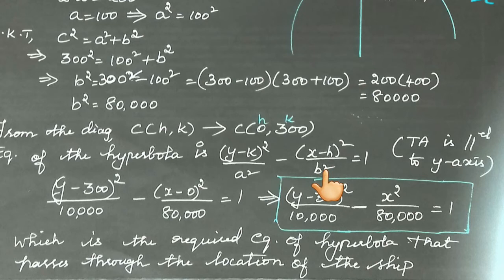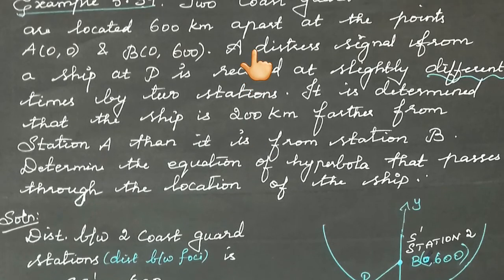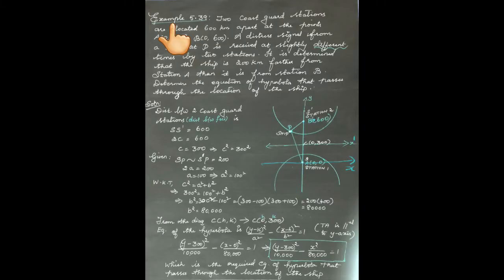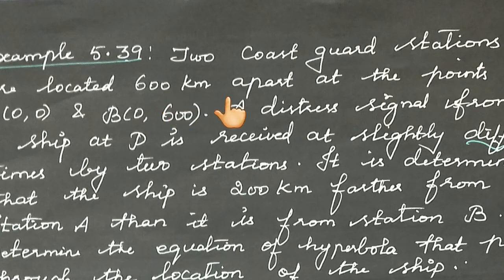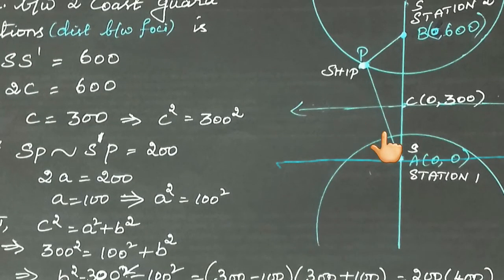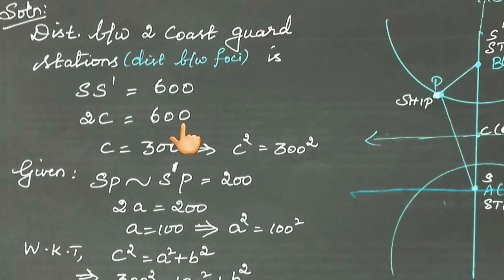Next, find a², b², and c². The distance between the two Coast Guard stations is 600 km, which is the distance between the two foci. So 2c = 600, which gives c = 300, and therefore c² = 300² = 90,000.